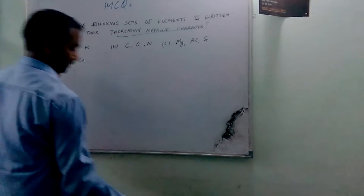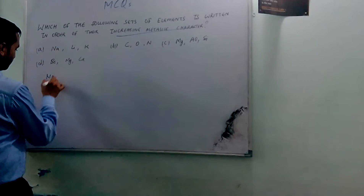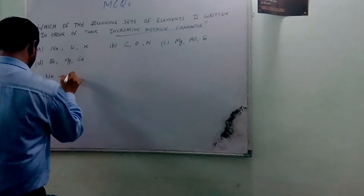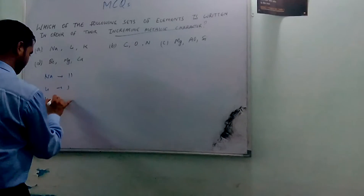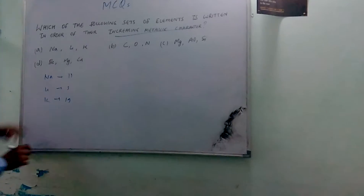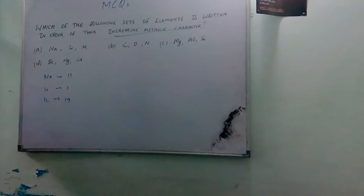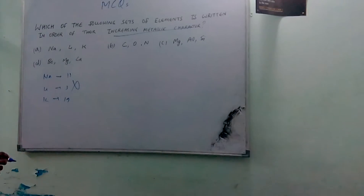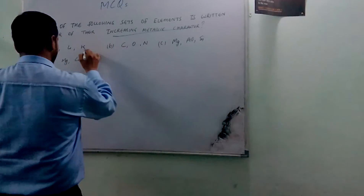Now coming to the options. The first option is sodium, lithium, potassium with atomic numbers 11, 3, and 19 respectively. Here the number of shells is not in increasing order, so this will not be the correct option.